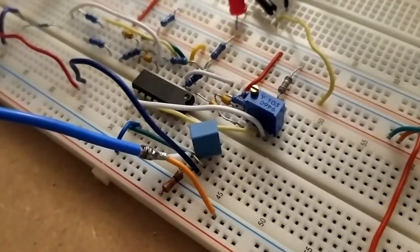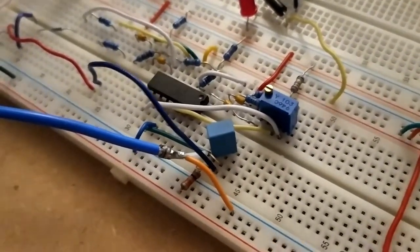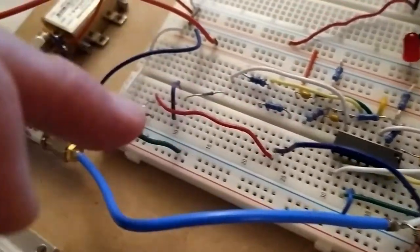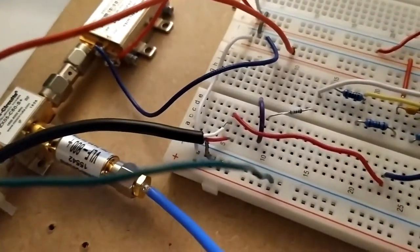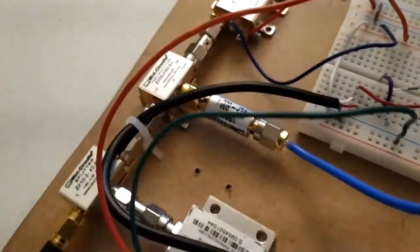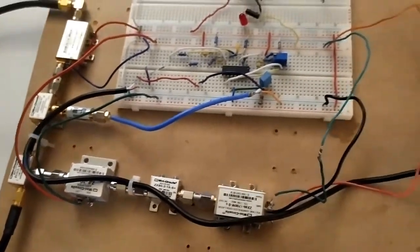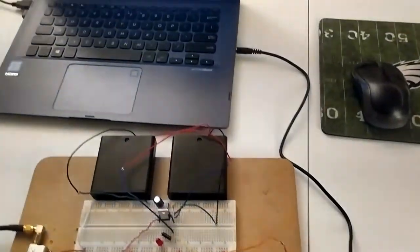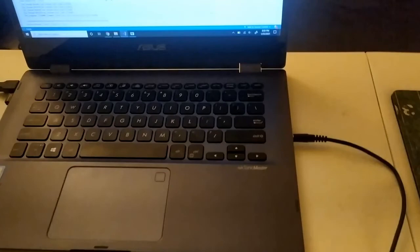So instead what I have going on is the output of the low pass filter is being sent into one of the two channels of the audio cable. And that cable is being sent into my laptop so it pretty much processes the output of the RF components as if it were actual audio.